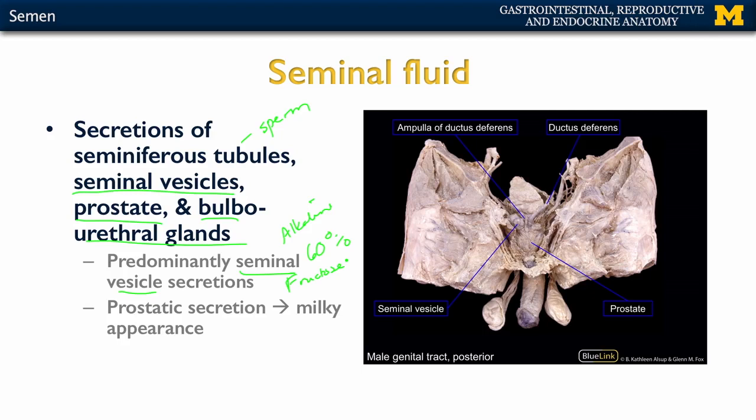Prostatic secretion is going to be more acidic and it contributes much less volume in terms of semen, but it is giving the semen that milky, whitish appearance.